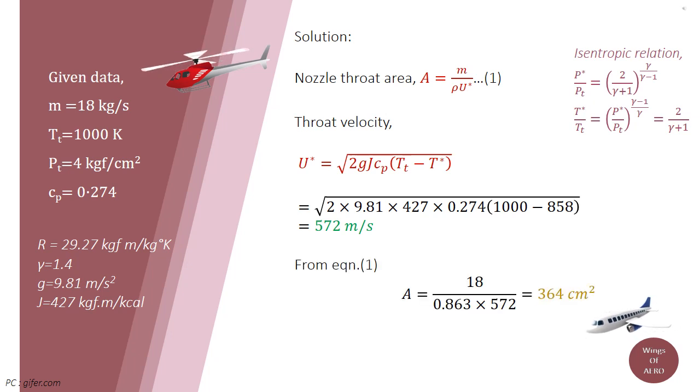Now, we can find the throat area. Solving equation number 1 with the appropriate values, we get the required throat area of the nozzle is 364 cm².